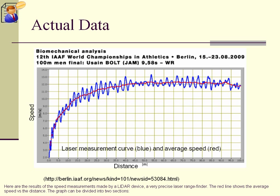Here are the results of the speed measurements made by a LiDAR device, a very precise laser rangefinder. The red line shows the average speed versus the distance. The graph can be divided into two sections.